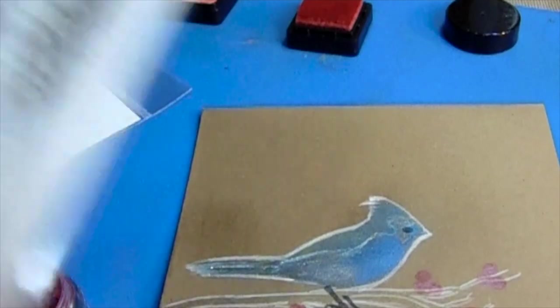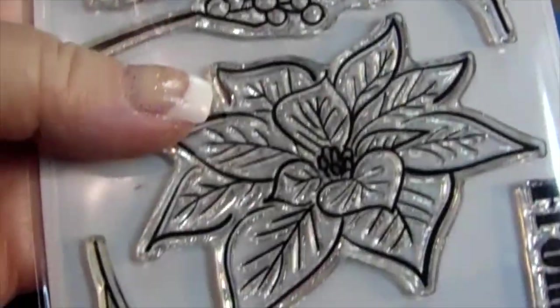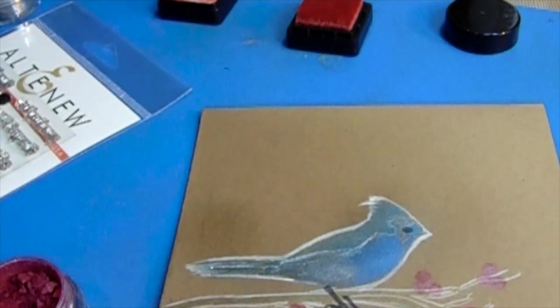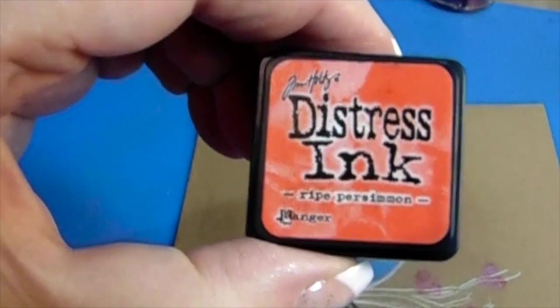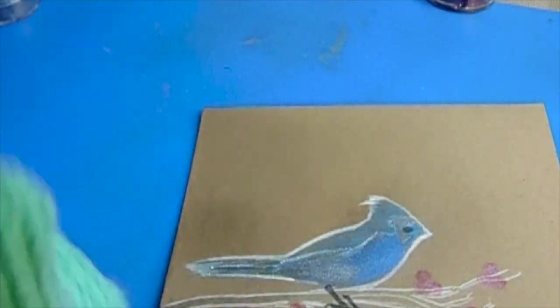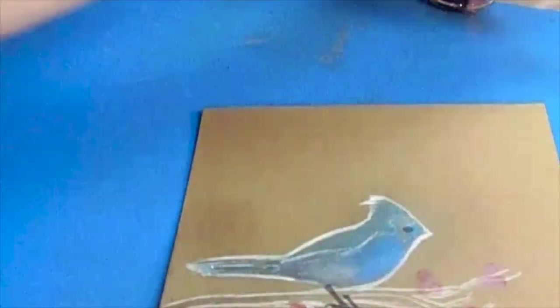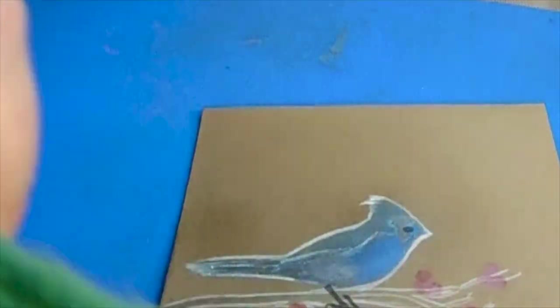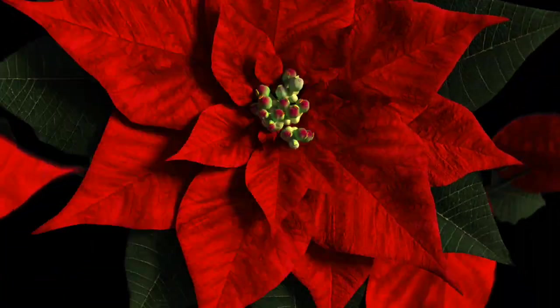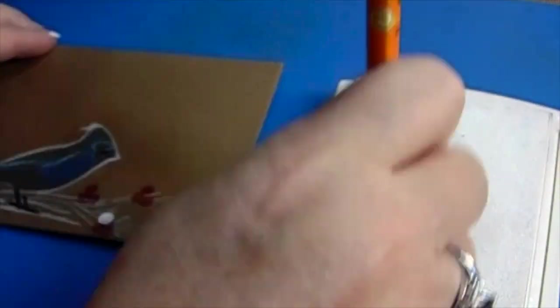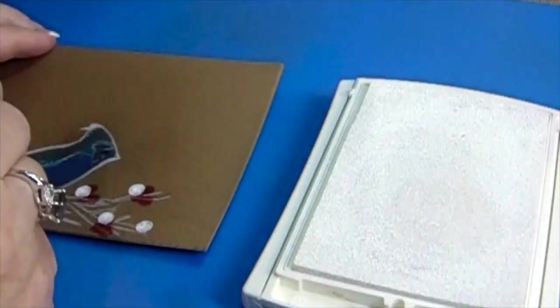I'm going to show you the Altenew Poinsettia and Pine set we're going to use. The ripe persimmon is the distress ink that I used for the little berries before I put the Perfect Pearls on top. Now I'm just cleaning up my stamps with a face cloth and putting the Perfect Pearls away, cleaning up my mat. This is a Wilton mat, by the way.